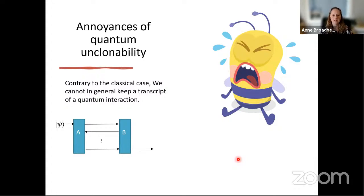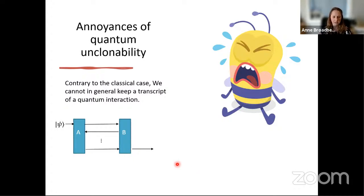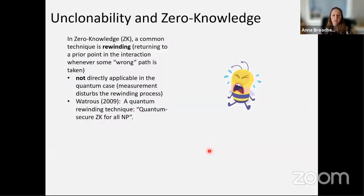In the quantum setting, this completely breaks down, because it's not possible in general to simultaneously have the input as well as what's going on on each wire. That's because maybe the input only existed in a single copy. So having a transcript would boil down to having copies, and that's not possible. This has brought many challenges to quantum cryptography.